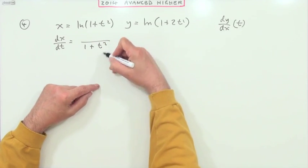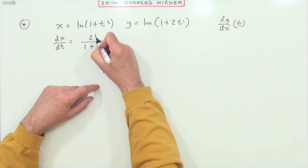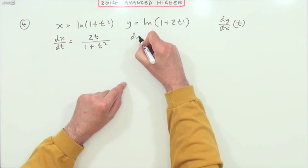Multiplied by the derivative of that, which I can pop in top, which is 2t.